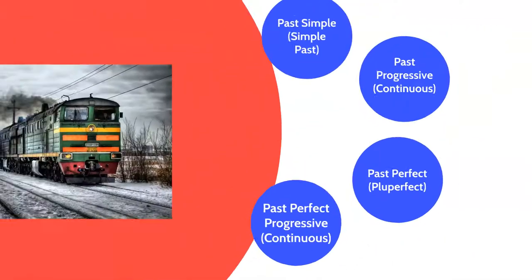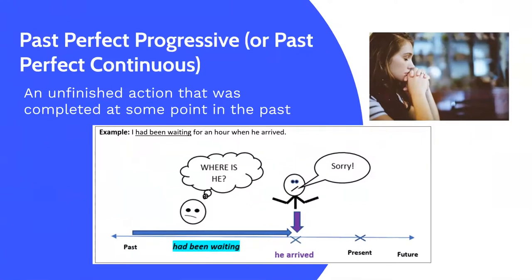The last past tense is a past perfect progressive, also known as a past perfect continuous tense. This shows an unfinished action that was completed at some point in the past. For example, I had been waiting for an hour when he arrived. He arrived is the past action. Had been waiting is the unfinished action before he arrived. So this is the past perfect progressive.